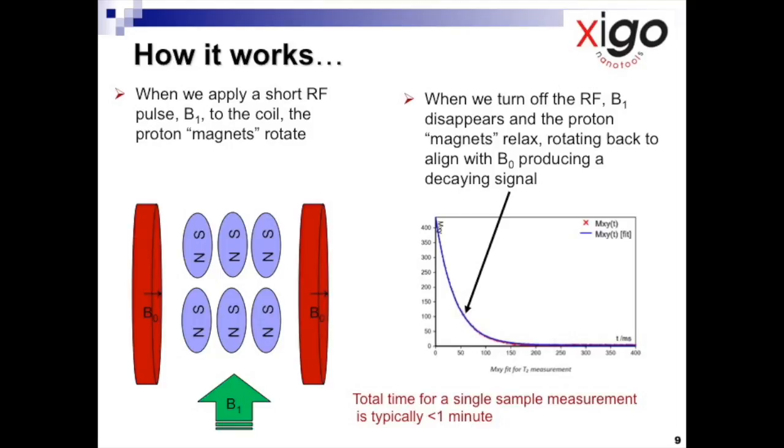If we apply an RF pulse at an appropriate frequency and duration to the RF coil, a temporary magnetic field B sub one is produced, and this is superimposed over the original static magnetic field.